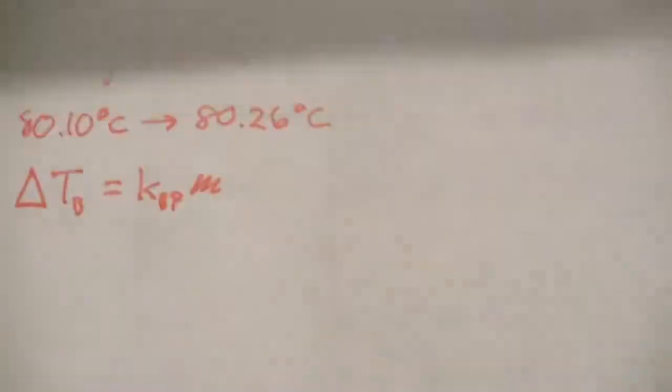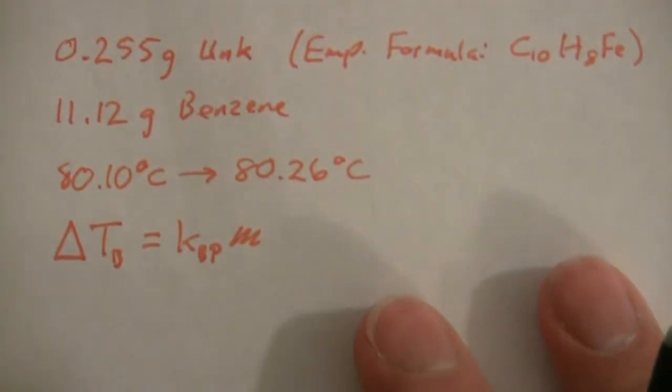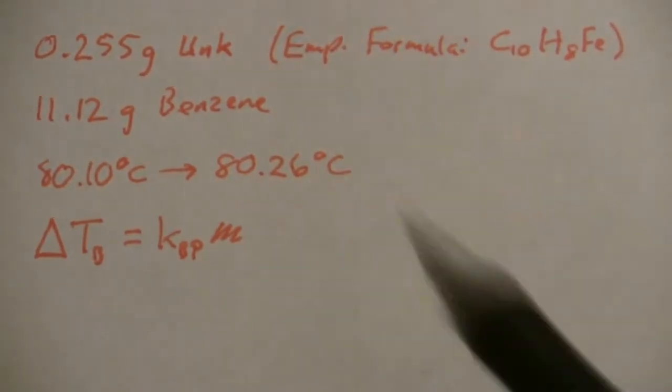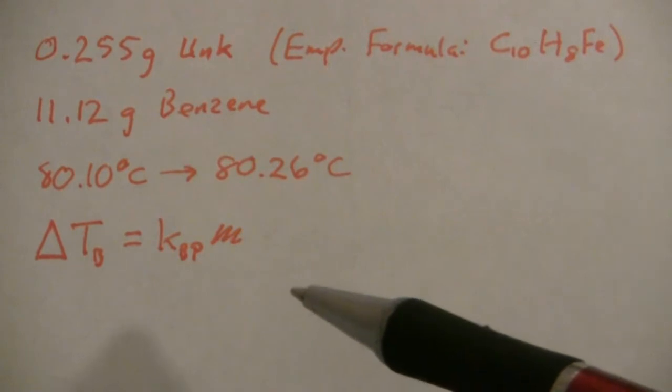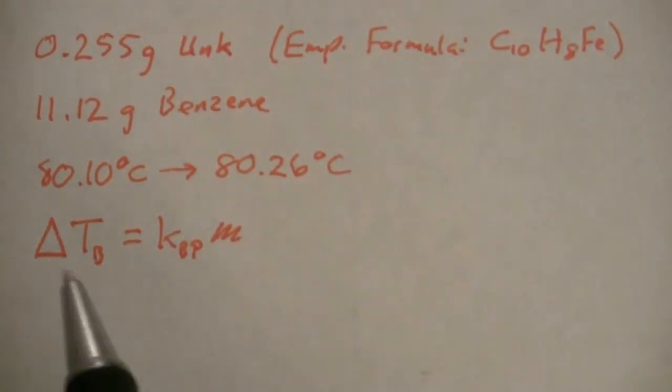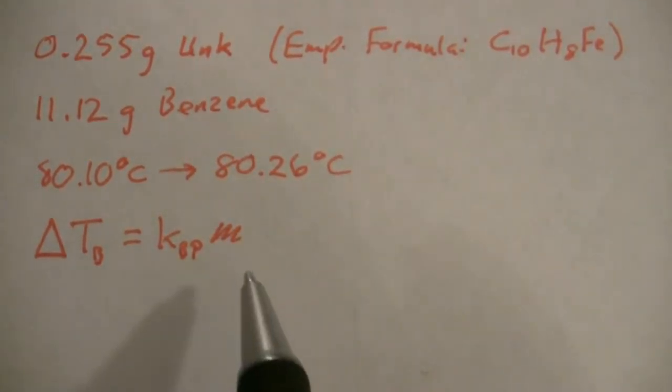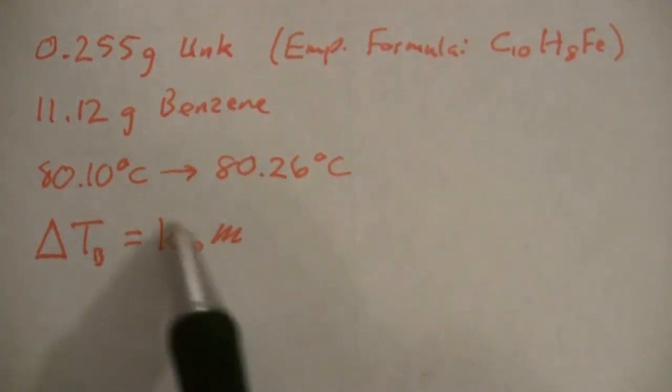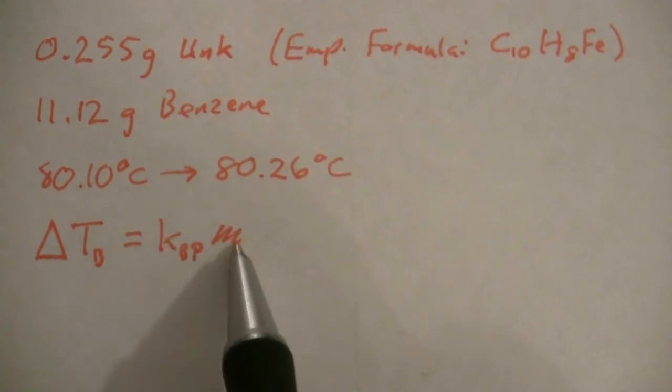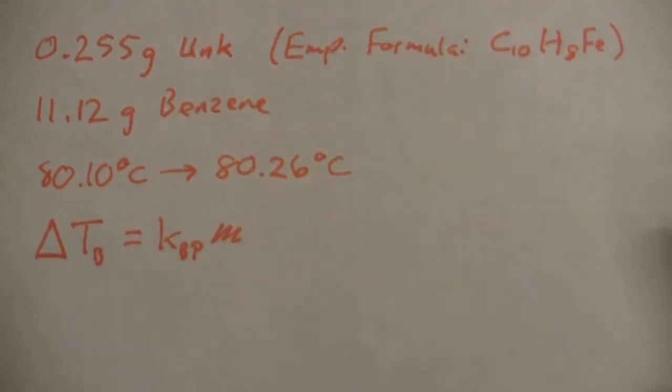Here's the information that we are given and this is the equation that we're going to use. The change in the boiling point is equal to the boiling point constant times the molality of the solution.